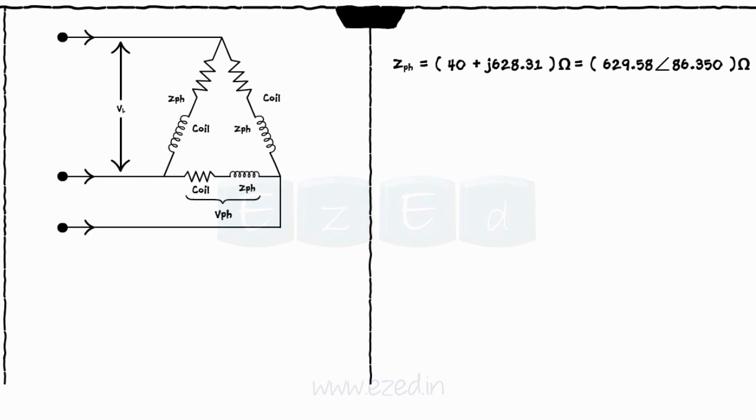For delta connected system, ZPH remains the same. For delta connection, we have VL equals VPH equals 350 volts and IPH equals VPH upon ZPH equals 320 milliampere.